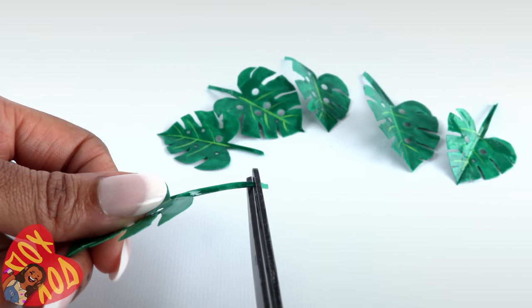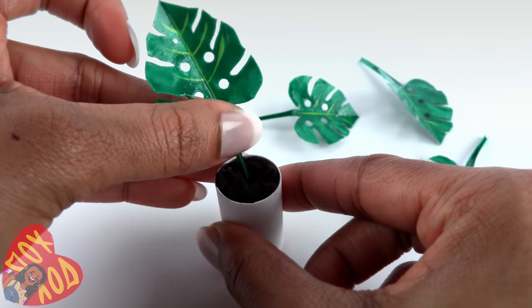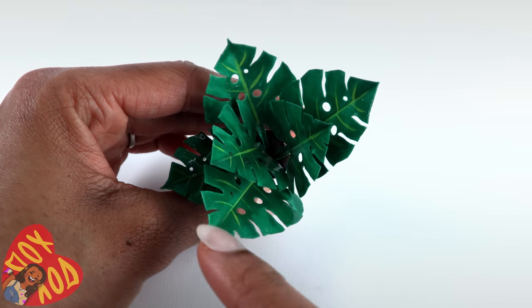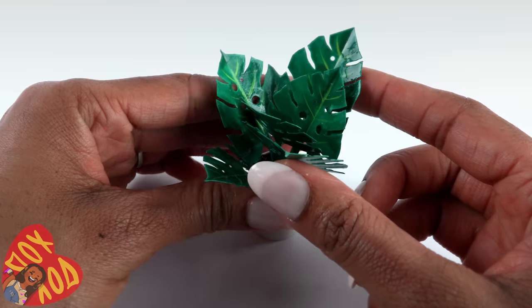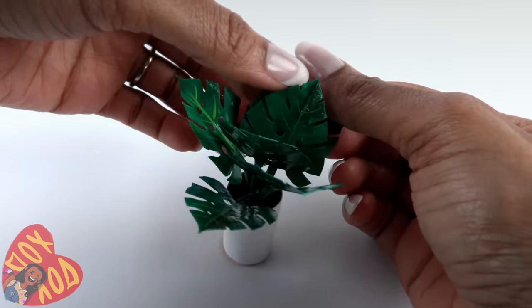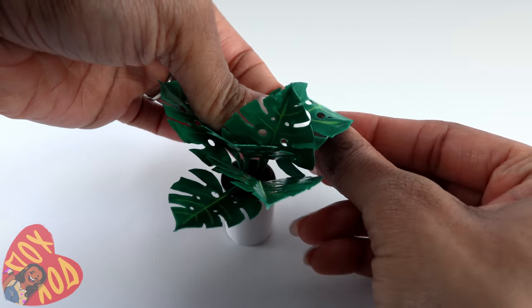Once dry, trim off the unpainted stem. Glue them into the pot in the hole that we made, going around in a circle. We want all of the veins in the leaves to be facing each other. Allow the glue to dry. Once dried, gently bend the leaves out and down just a little bit.